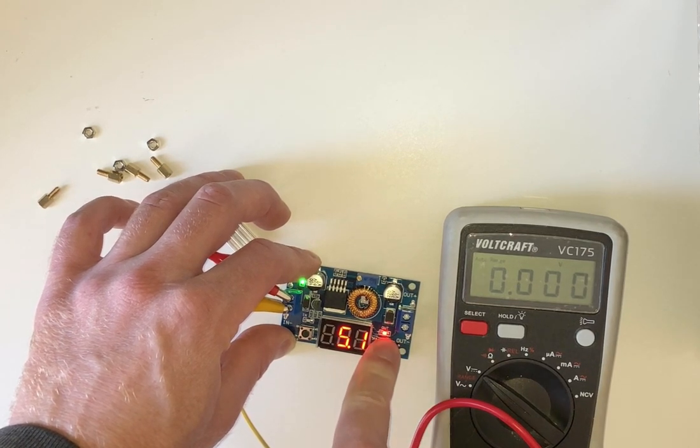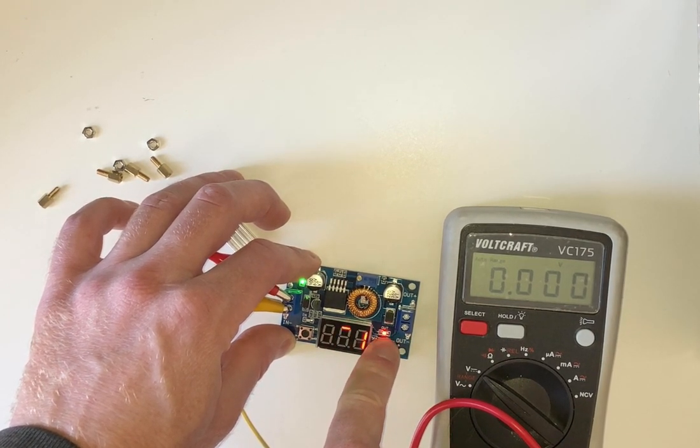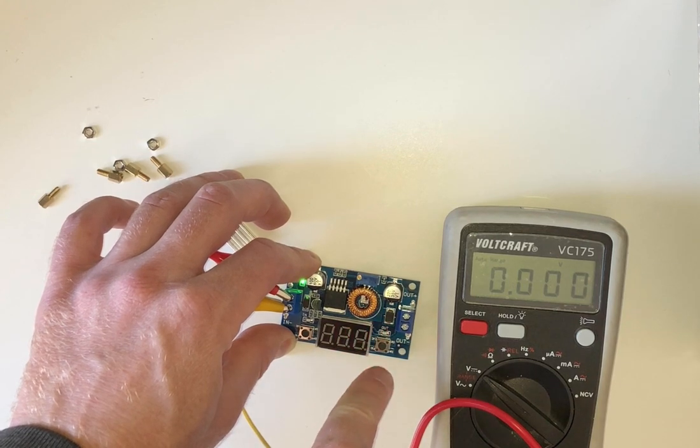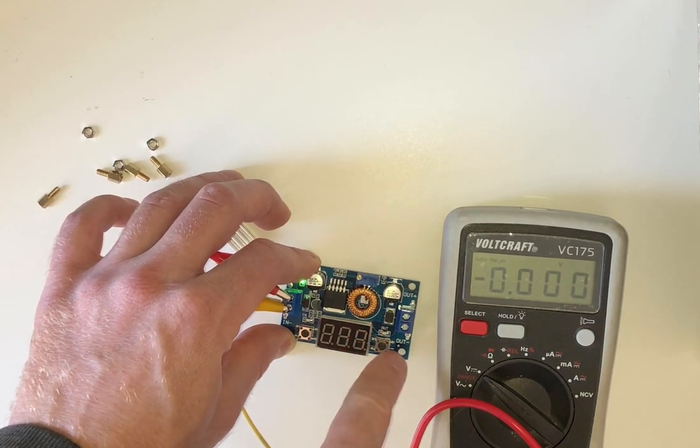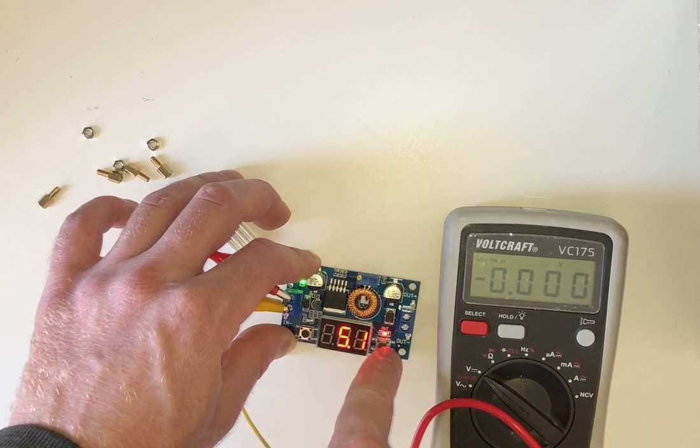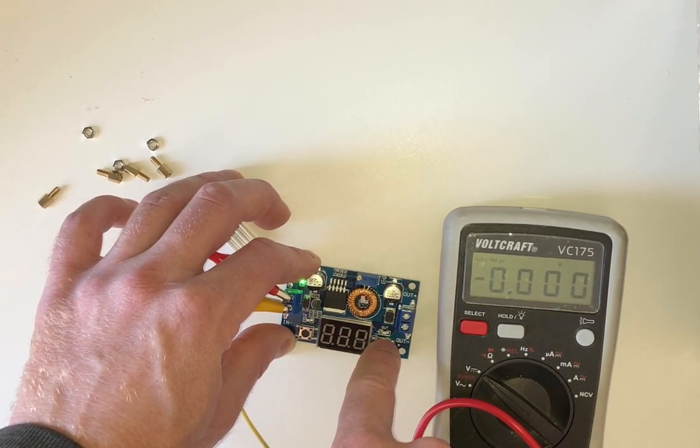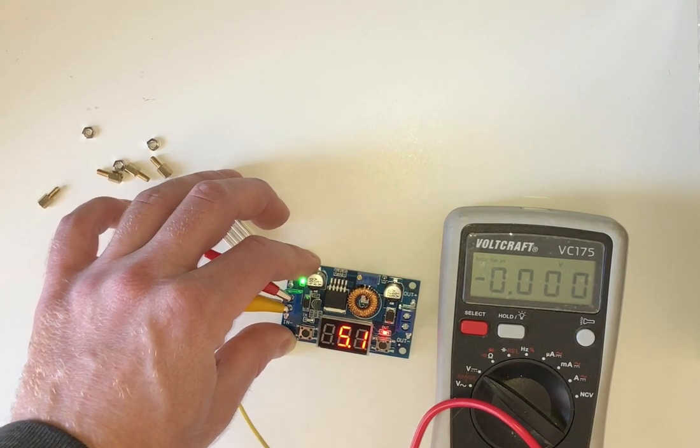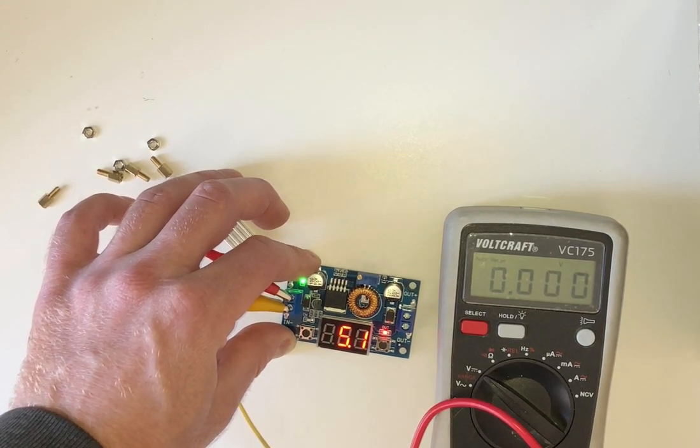So initially I worked out that if you hold down then this starts flashing and then you can use these left right buttons to go up and down and then you hold for three seconds to set this number. And don't be fooled that's not the actual output voltage.